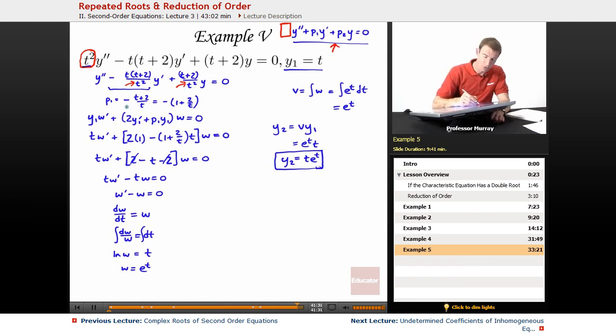Our p1, remember you have to include the negative sign, simplified to minus 1 plus 2 over t. Then we invoke the generic formula for reduction of order. You always use this formula: y1 w prime plus 2 y1 prime plus p1 y1 times w equals 0. Plug in what y1 is, that was given to us. Plug in what y1 prime is, that's 1. Plug in the p1 we just figured out.